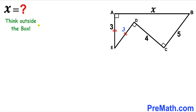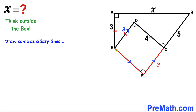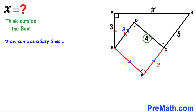We are going to think outside the box and draw some auxiliary lines. I have created line FC equal to ED, and both are parallel, so if DE is 3 units then FC is 3 units as well. Likewise, segment EF equals segment CD and both are parallel, so EF is 4 units. Keep in mind that points B, C, and F are collinear.